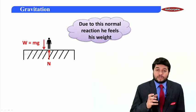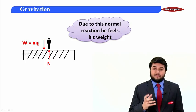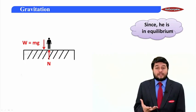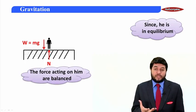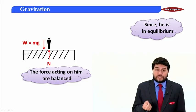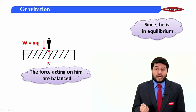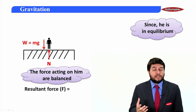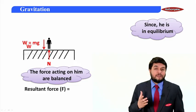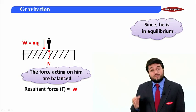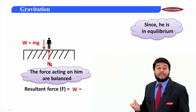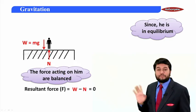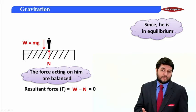Because of this normal reaction, he feels his weight. If I consider him to be in equilibrium, then the forces acting on him are balanced. The resultant force acting on this person would be the weight minus the normal reaction, which will obviously be zero, because he is in equilibrium.